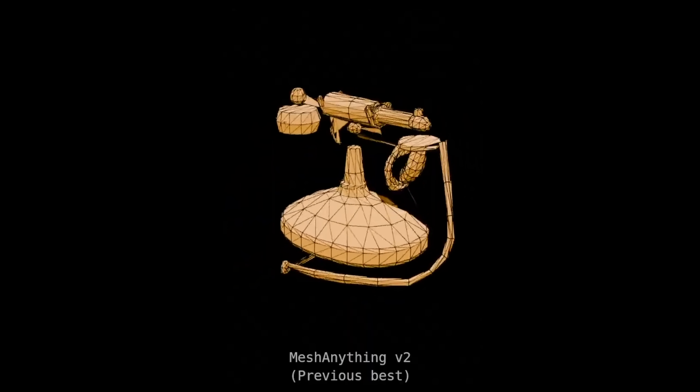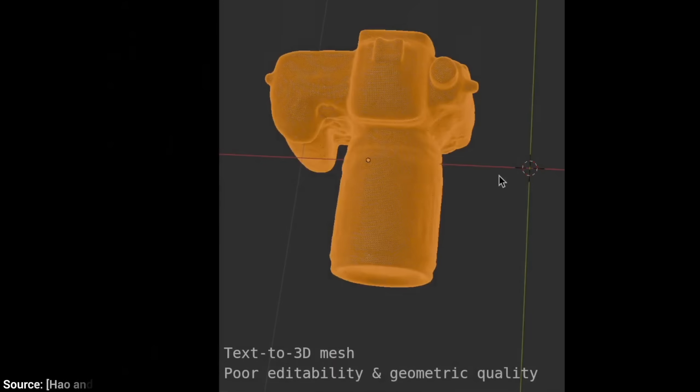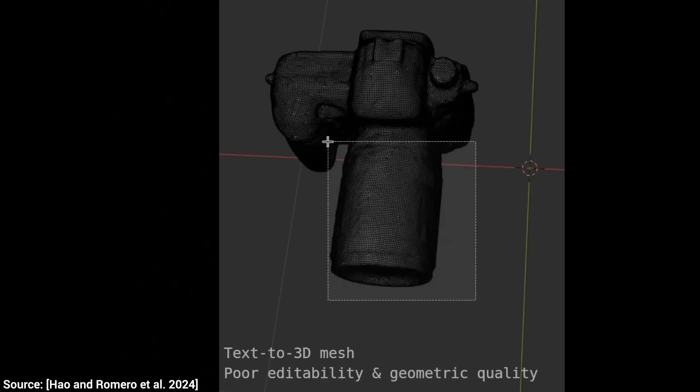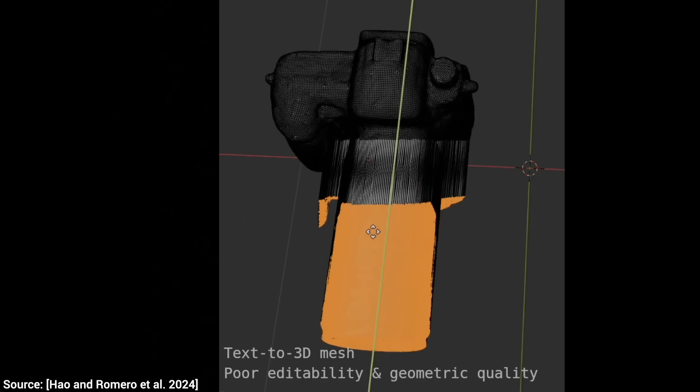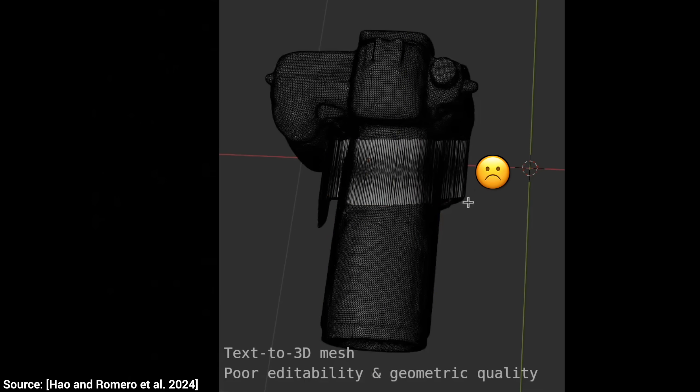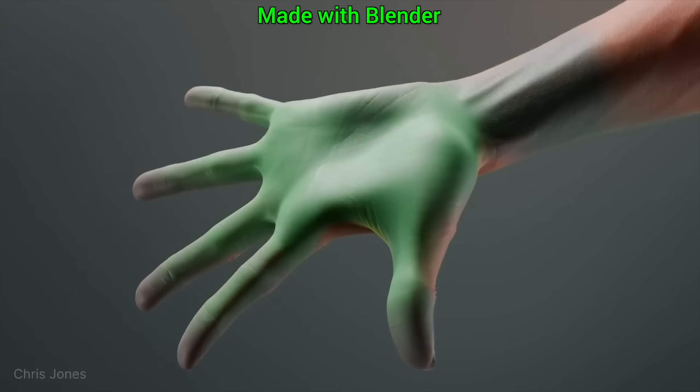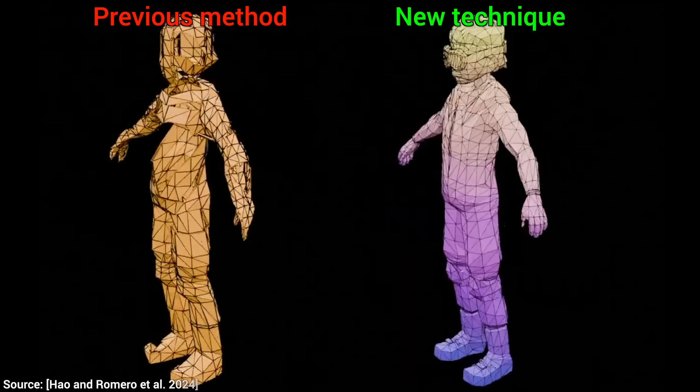But it gets worse. Even if you get an object that is poorly constructed—we like to say that it is poorly tessellated—so even if you wanted to do something with it, you can't move and edit the parts intuitively. And that is why I was super excited for this paper that promises something better. Now, let's see together.